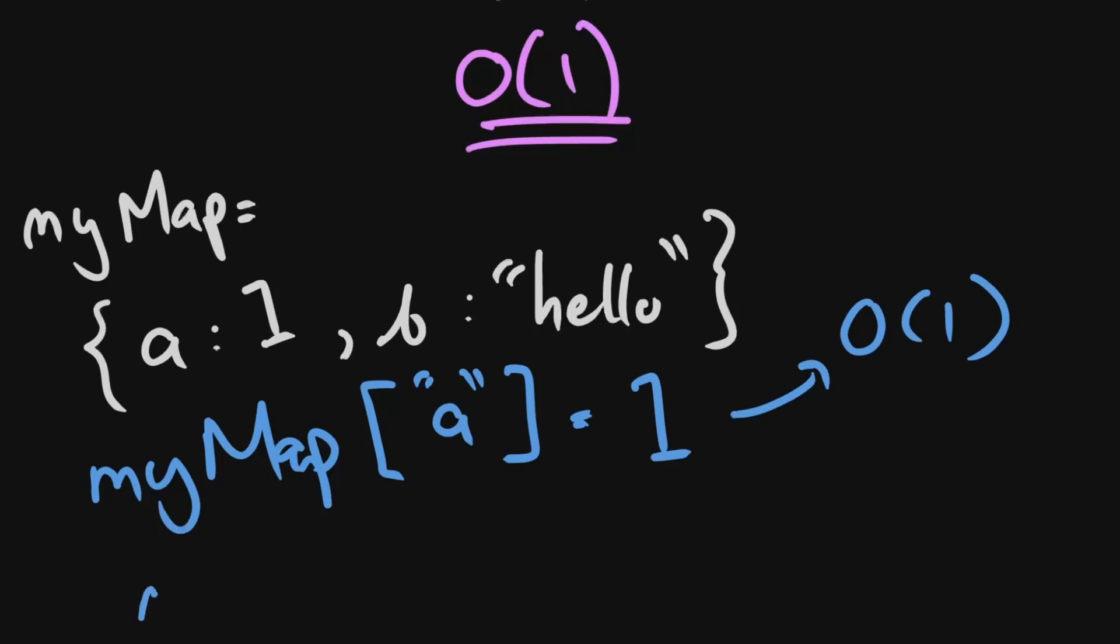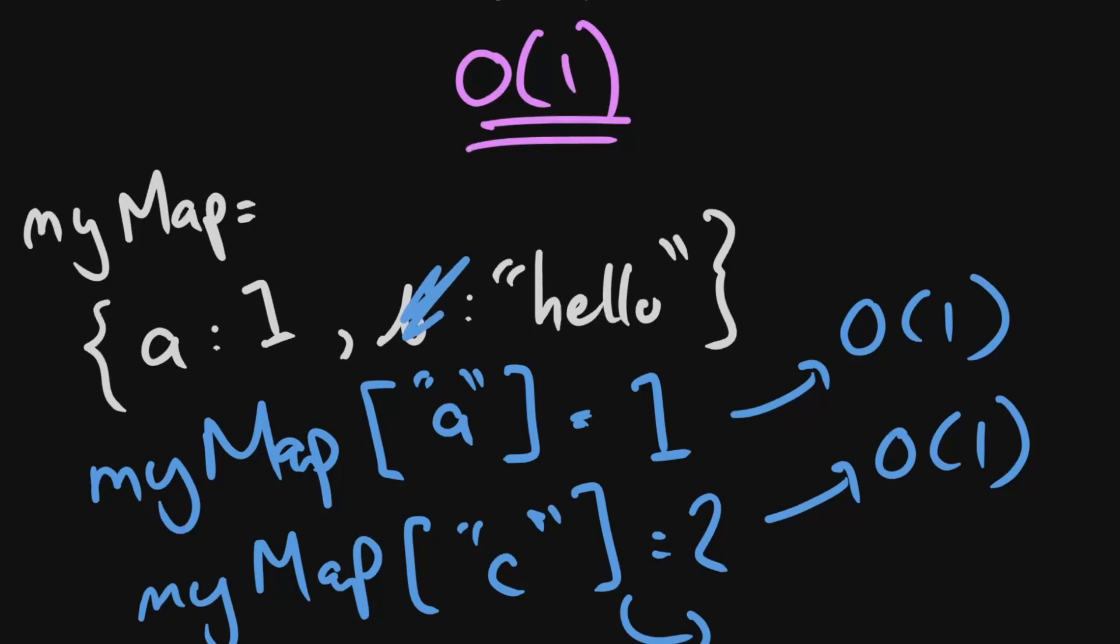So say I wanted to do my map C equals 2. This also takes O(1) time. I'll go into a bit more detail how this works under the hood once I cover hash maps. But just wanted to mention that this is also an O(1) operation.